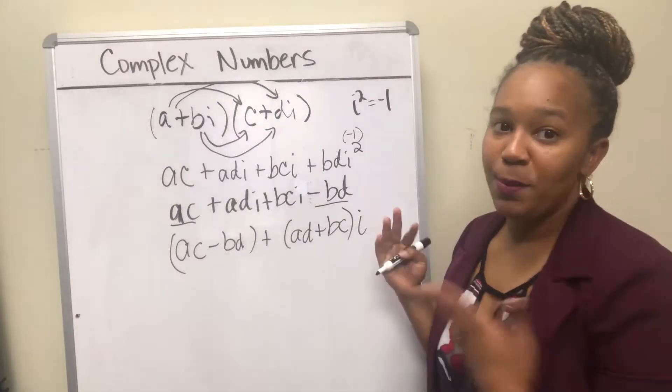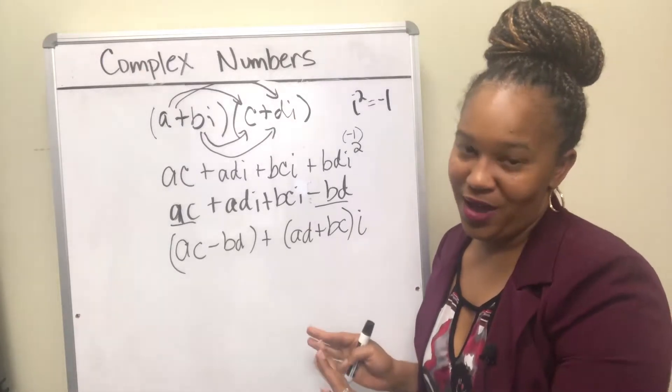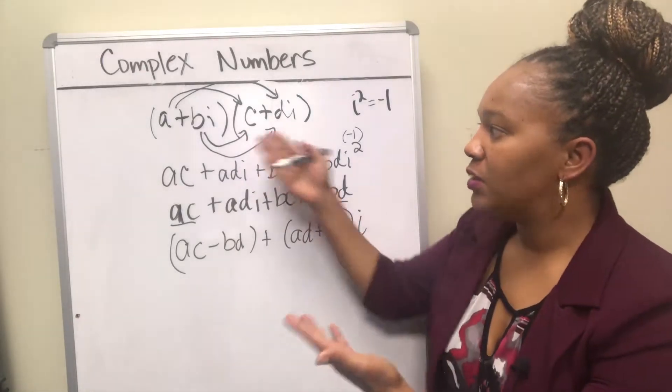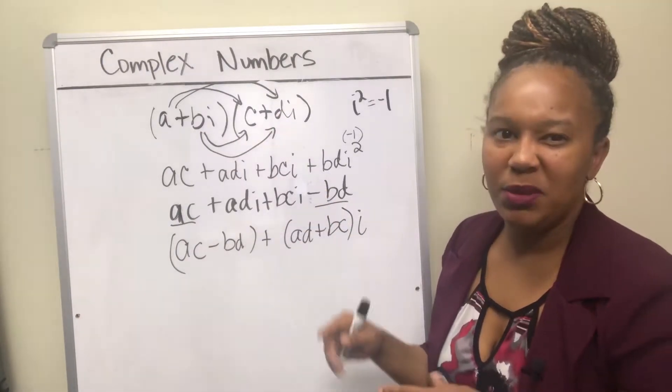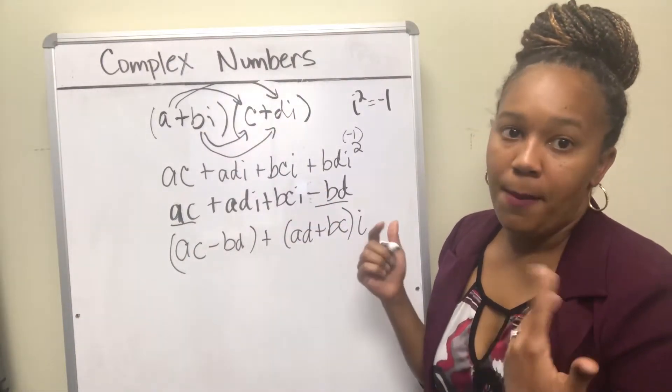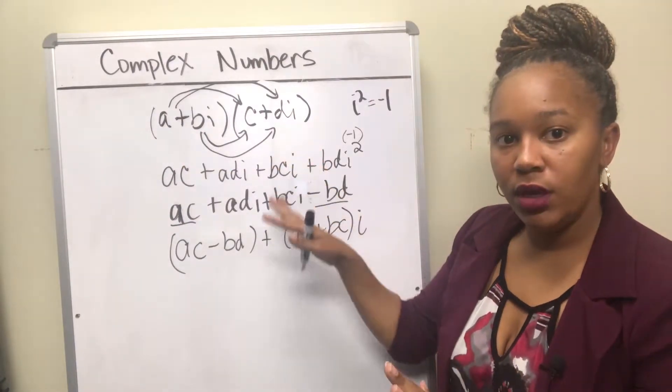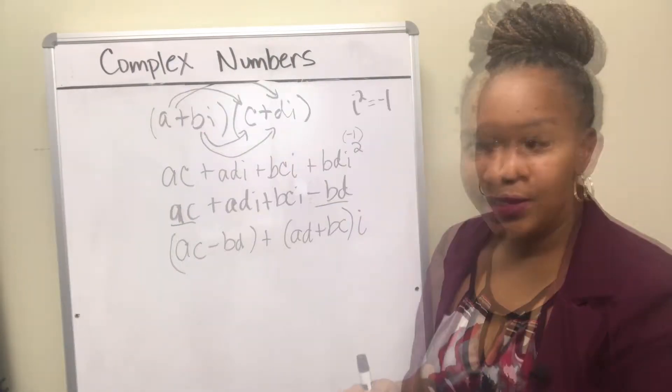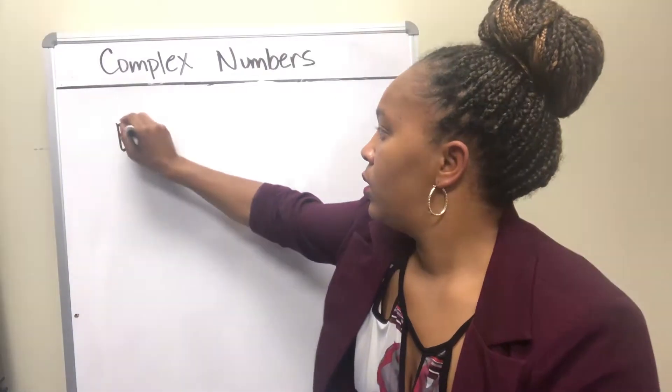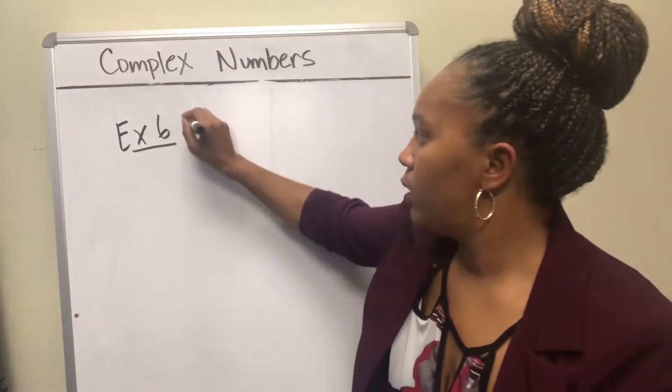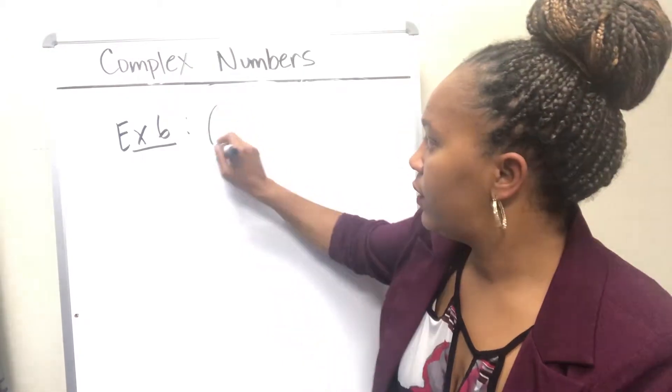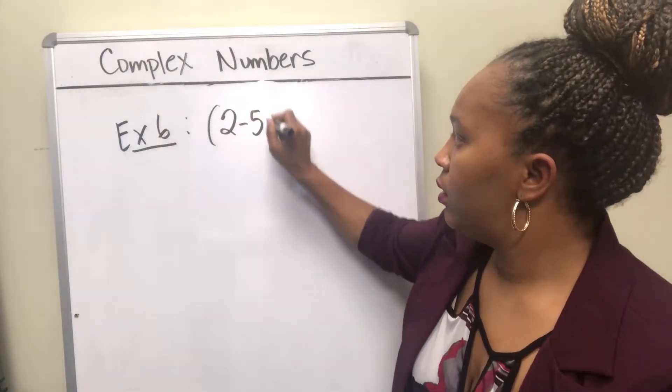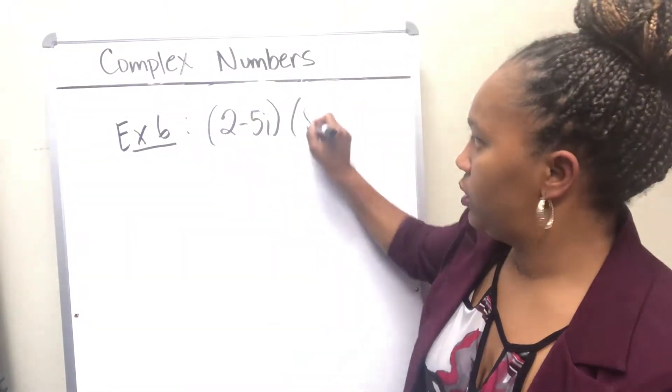So you can remember this if you want, or every time you want to multiply two complex numbers, you can actually just do what we did. Some people like to call it FOIL. I just like to say multiply everything over here by everything over here. So let's look at an example, Example 6.